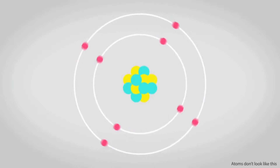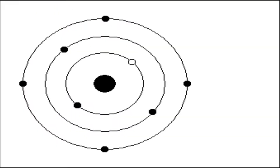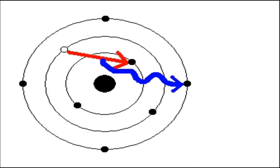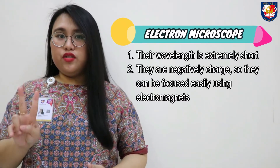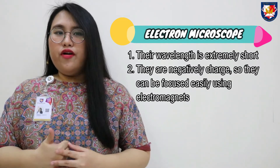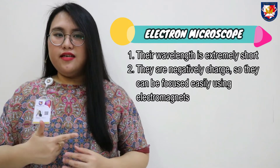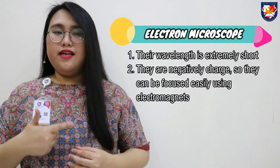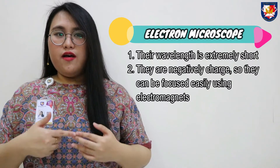An electron is a negatively charged particle which orbits around the nucleus of an atom. When a metal becomes very hot, some of its electrons gain so much energy that they leave the metal. The free electrons behave like electromagnetic radiation and have a very short wavelength. Electrons are suitable for the microscope for two reasons: first, their wavelength is extremely short; second, since they are negatively charged, they can be focused easily using electromagnets.